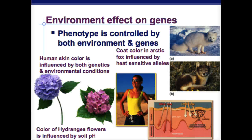Something else that can affect your genes is the environment. Depending on the environment, your phenotype is going to be altered. Your genes stay the same, but the expression of your phenotype will be slightly different. For example, hydrangea flowers — based on the pH of the soil — determines their color. Your skin color, as long as you're not albino, is determined by how much sun you're getting.